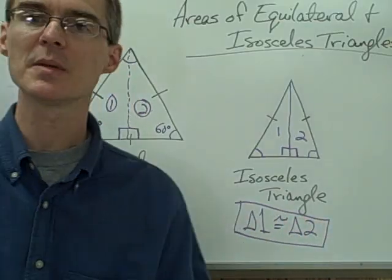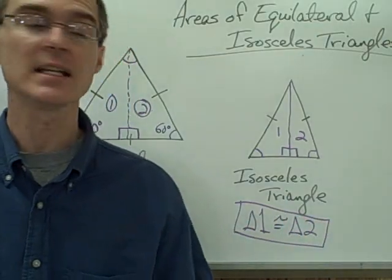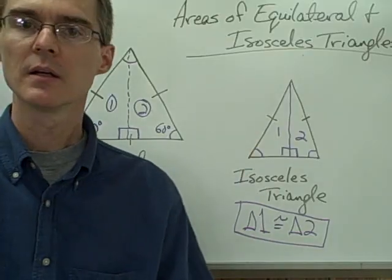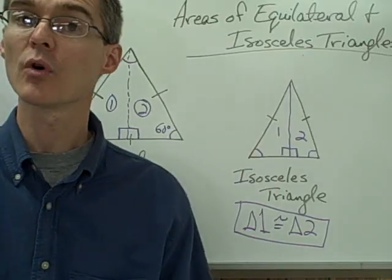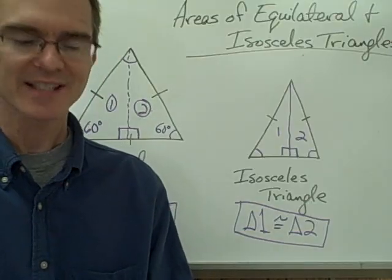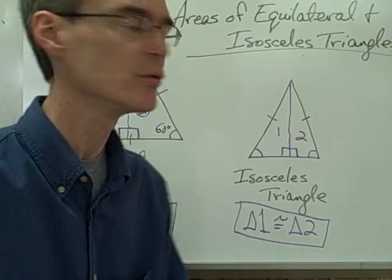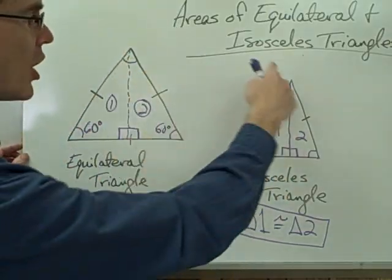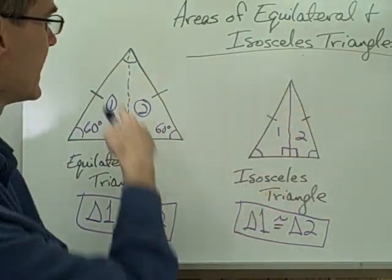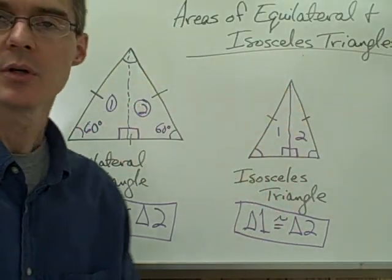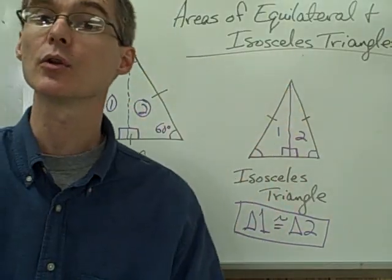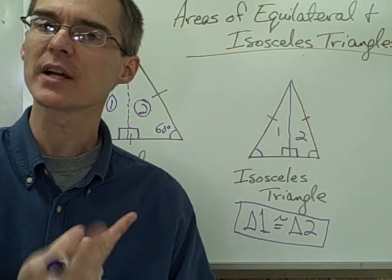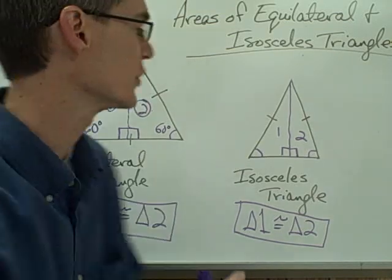Triangle number one is congruent to triangle number two for the isosceles triangle as well. That's going to be a very handy property. So let's take a look at how we might use this property — that drawing an altitude on an equilateral or isosceles triangle divides it into two congruent triangles.